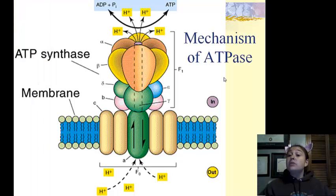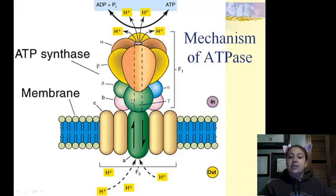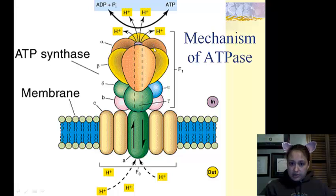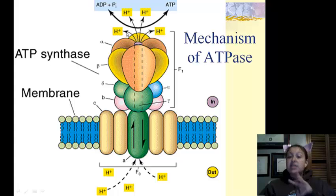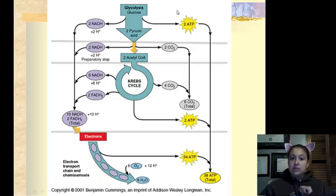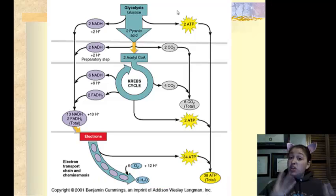ATP synthase: this is an up-close look at what ATP synthase actually is. Yes, it does look like a balloon. Every time hydrogen comes through, this turns, and for every three hydrogens, it creates enough energy to take ADP plus a phosphate and create ATP. Overall, aerobic respiration: 38 ATP. Good amount.